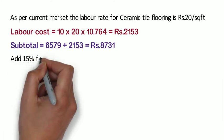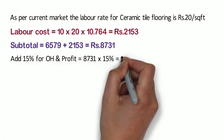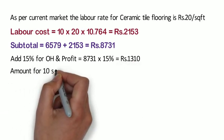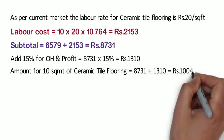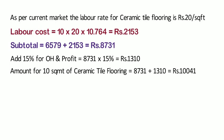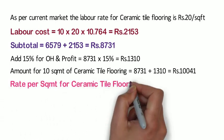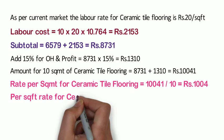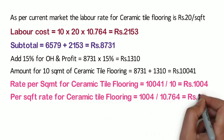Add 15% for overhead and profit: 8,731 x 15% = 1,310 rupees. Amount for 10 square meters of ceramic tile flooring is 8,731 + 1,310 = 10,041 rupees. Rate per square meter is 10,041 ÷ 10 = 1,004 rupees, and the rate per square feet is 1,004 ÷ 10.764 = 93 rupees.